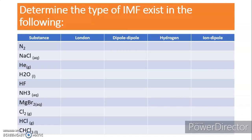Now let us work through the worksheet. Let's identify the different substances and their corresponding intermolecular forces. Nitrogen (N₂) — London dispersion forces. Aqueous sodium chloride — ion-dipole. Helium gas — London dispersion forces. H₂O (water) — hydrogen bonding.